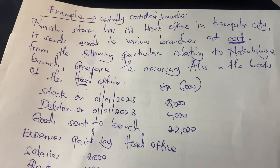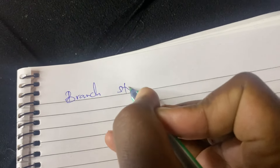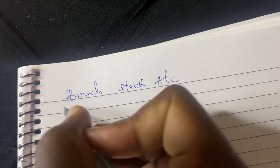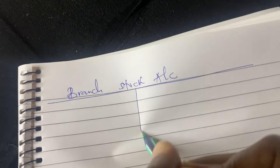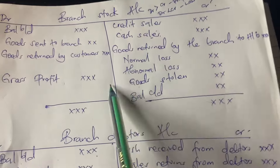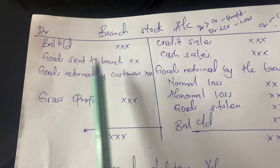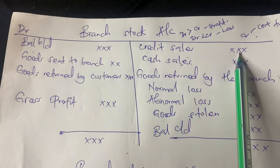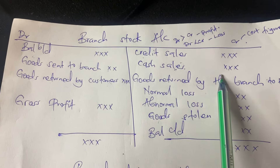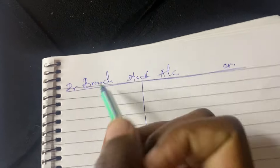Since the goods are sent at cost and it is an essentially controlled branch, we are going to prepare the six accounts. We start with the Branch Stock Account. On the debit side we record: opening balance, goods sent to the branch, and goods returned by customers. On the credit side: credit sales, cash sales, returns by the branch, normal loss, abnormal loss, goods stolen.